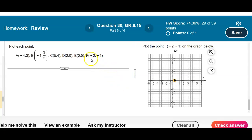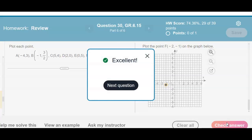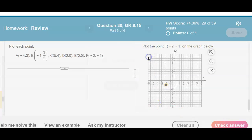And the last point is going negative 2 and then negative 1. So we're going to move to the left negative 2. And then we're going to go down negative 1. And there is our result.